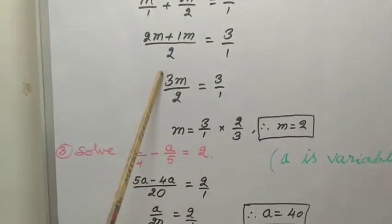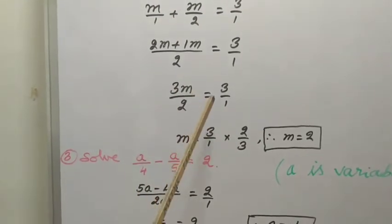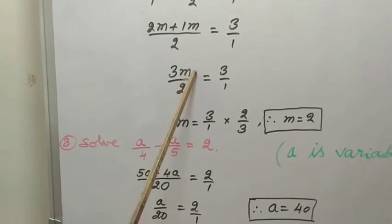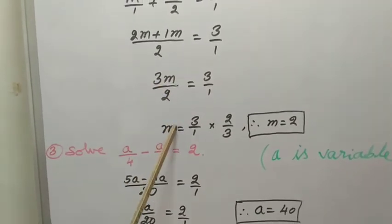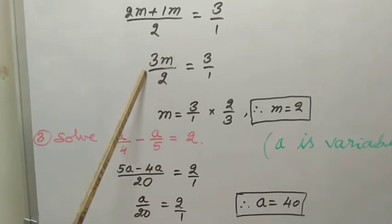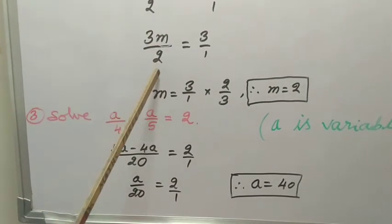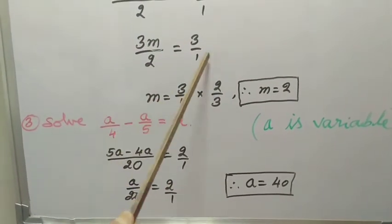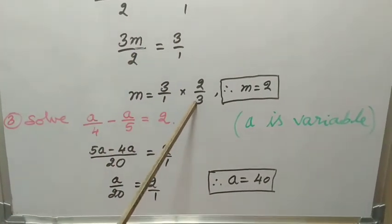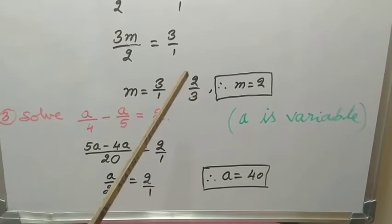Cross-multiply like this, or you may keep this variable as it is, M, 3 by 1 as it is. Now, 3 by 2 is there. You may cross-multiply. This denominator goes to numerator and numerator comes to denominator. That we call it as cross-multiplication.